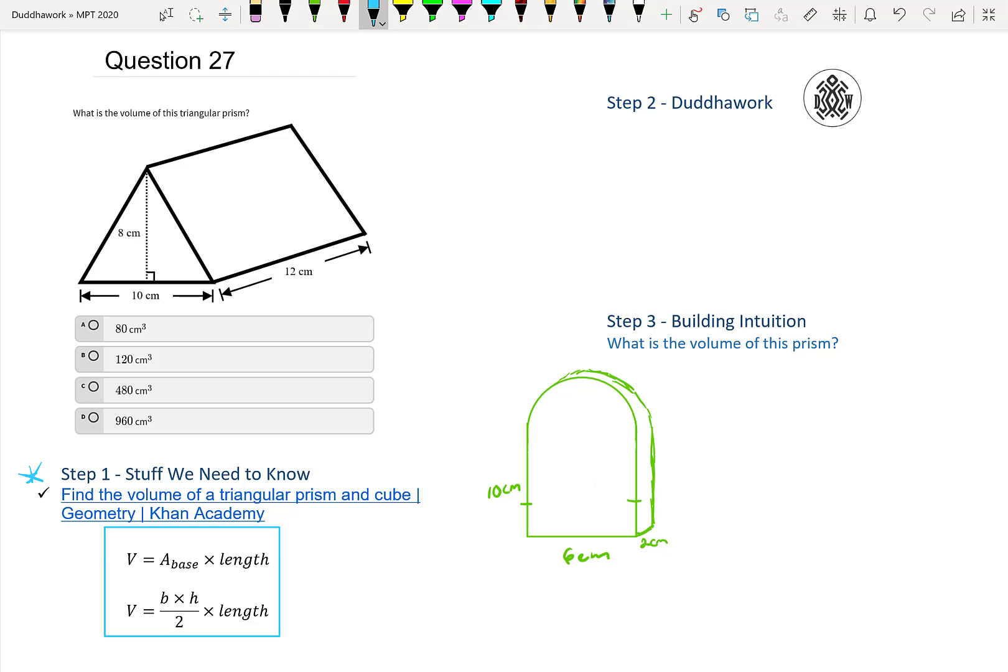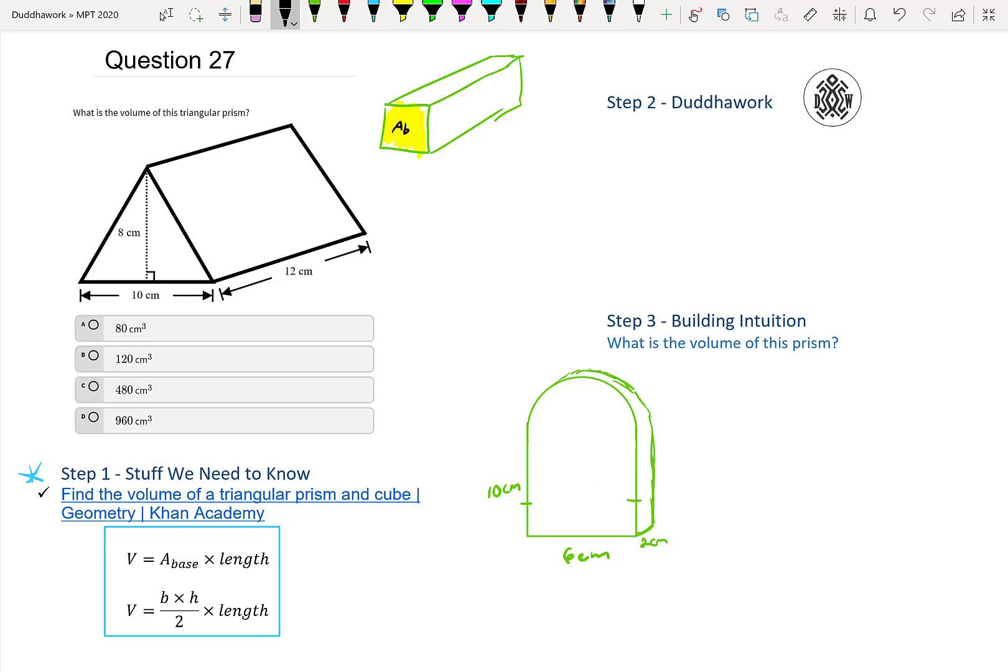And basically, we just need to know the formula for the volume. And for any type of prism, let's take a rectangular prism. What we do is we find the area of the base, and then this is the length. So the volume is always the area of the base times the length. And one way you can think about this is, let's say you have a pile of paper. One sheet of paper doesn't really have volume. It's too thin to have a specific volume, but just for the sake of this analogy, imagine it doesn't have volume.